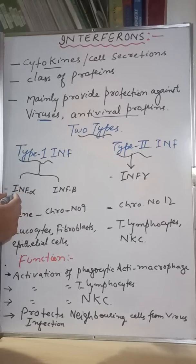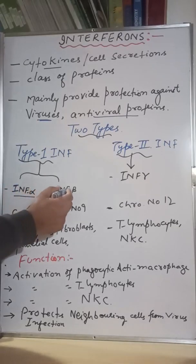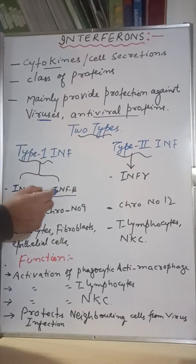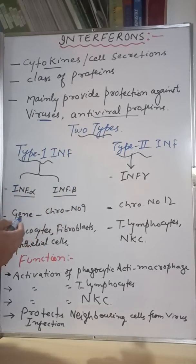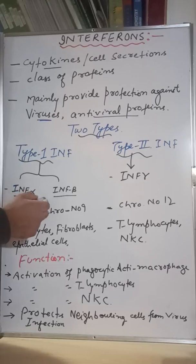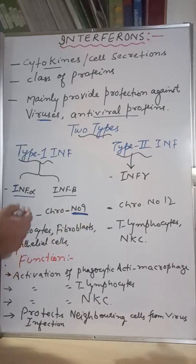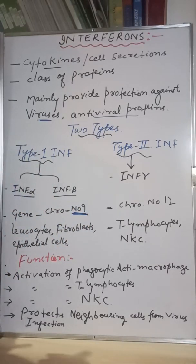Type 1 interferon consists of INF-alpha (interferon alpha) and INF-beta (interferon beta). The gene responsible for controlling INF-alpha and INF-beta is present on chromosome number 9 — very important for exams.